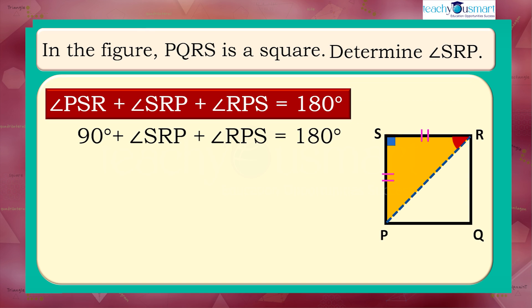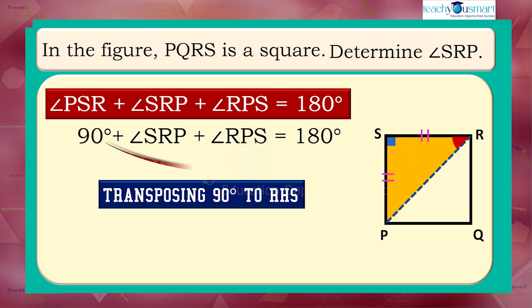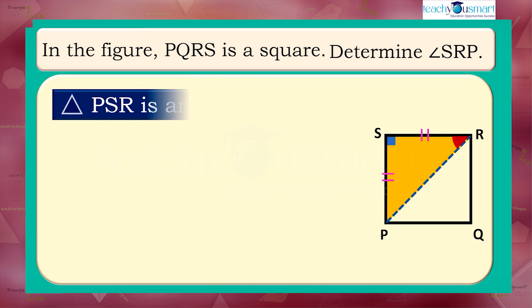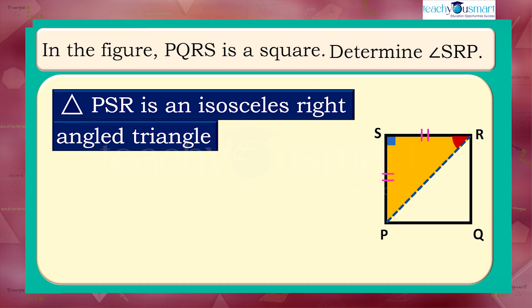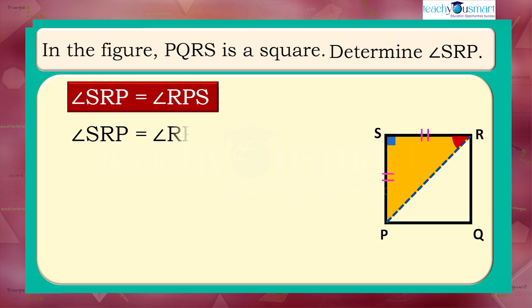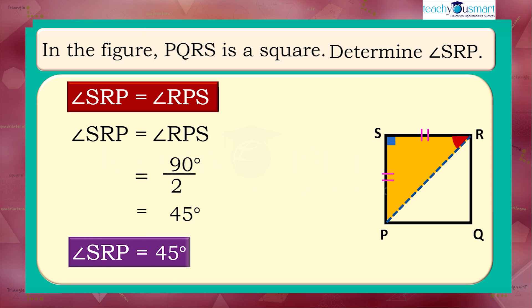90 degrees plus angle SRP plus angle RPS equals 180 degrees. Since triangle PSR is an isosceles right-angled triangle, the angles opposite to equal sides are equal. Angle SRP equals angle RPS equals 90 degrees divided by 2 equals 45 degrees. Therefore, angle SRP equals 45 degrees.